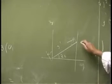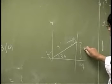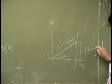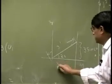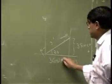So here, the length here is going to be 3 sine 20. The length here is going to be 3 cosine 20.